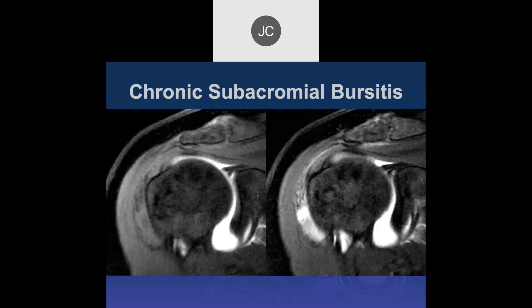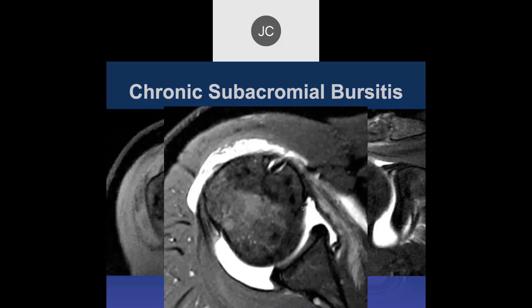On arthrogram, no fluid extends into the subacromial subdeltoid bursa on T1 fat-sat, but on PD fat-sat we can see all this fluid and synovial thickening, consistent with subacromial bursitis.